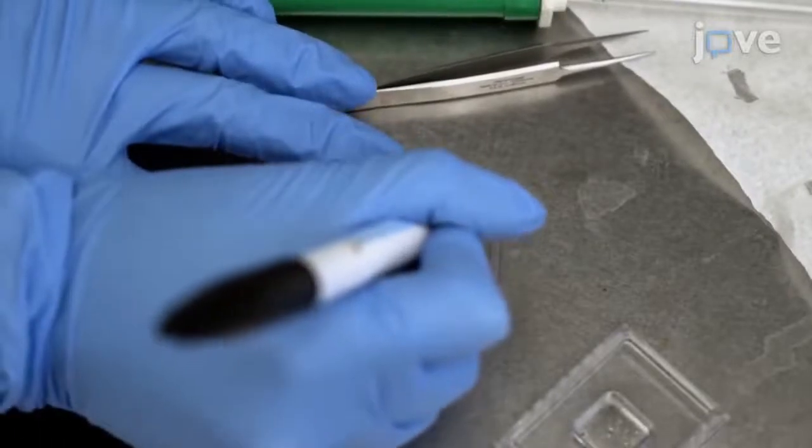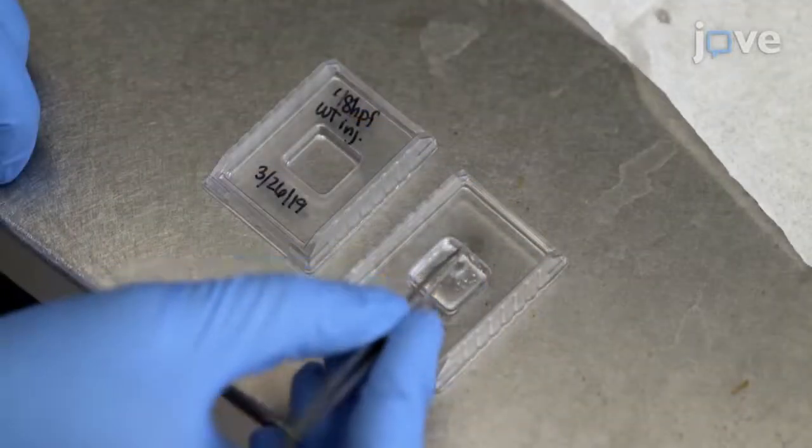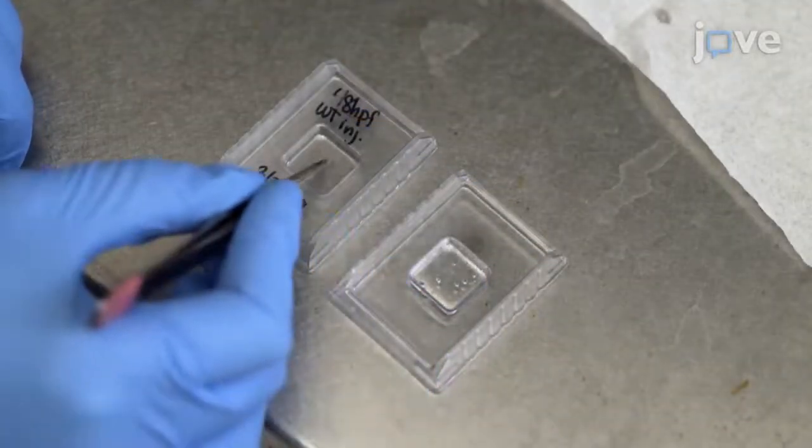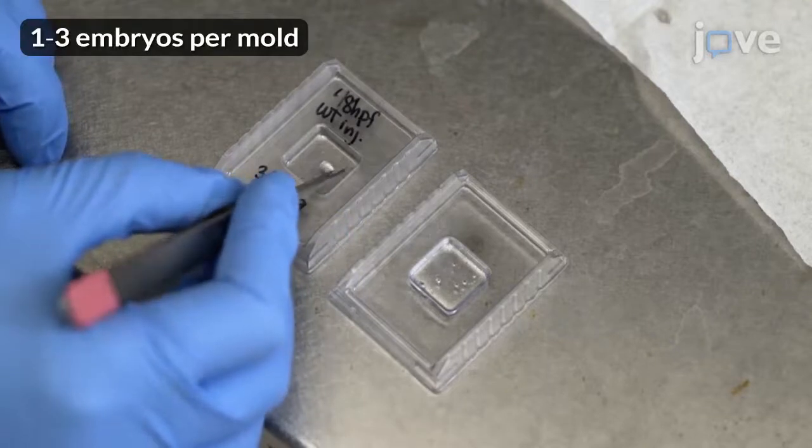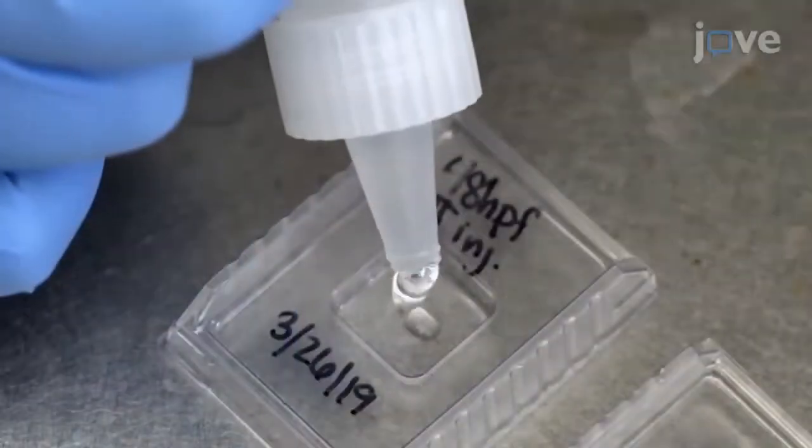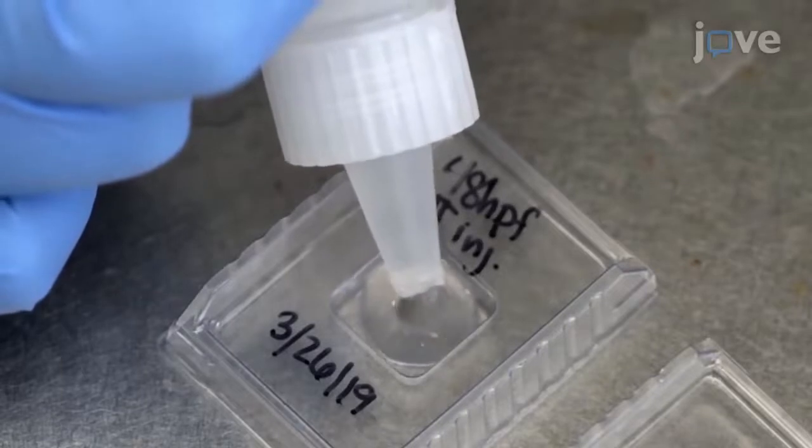Prepare labeled plastic molds and transfer desired embryos into the empty labeled plastic molds, minimizing carryover of OCT medium. Then gently fill with OCT medium to the top of the molds with embryos.